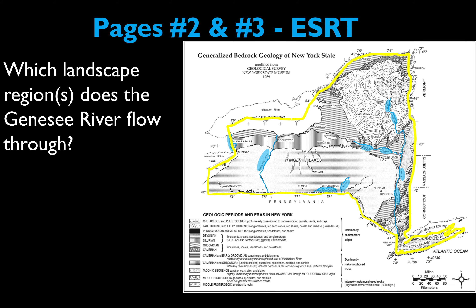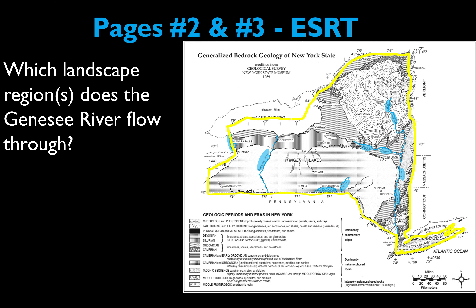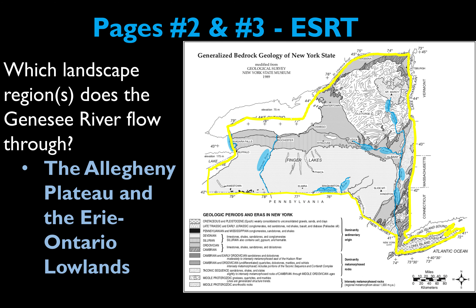Here's an example question of what that could look like: Which landscape region does the Genesee River flow through? Your first step is identifying the Genesee River, then look at page two of the reference table and imagine where the Genesee River would be located. Since these two pages correspond to each other, we can notice that the Genesee River flows through the Allegheny Plateau and the Erie-Ontario Lowlands. It flows through two different landscape regions, and you need to use pages two and three at the same time to verify that.